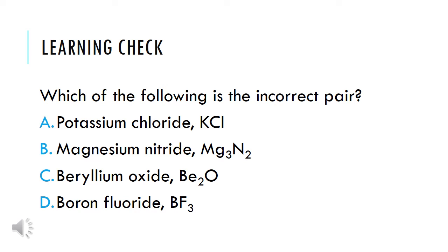Learning check number 2: which of the following is the incorrect pair? You're looking for the one where the name does not match the formula, or the formula is written incorrectly. The answer is C, beryllium oxide BE2O. The reason why this is incorrect is not because the name is written wrong, but because of the formula. Beryllium is in group 2A and forms a 2+ ion. Oxygen is in group 6A and forms a 2- ion. When we criss-cross those charges, we get BE2O2, but since they have the same charge, they reduce to BEO. So the correct formula for beryllium oxide would be BEO.